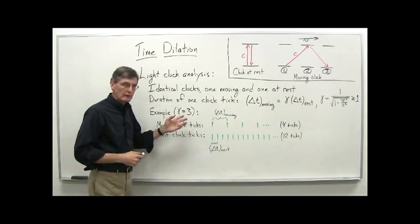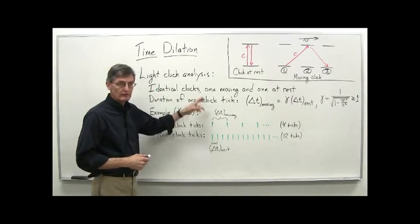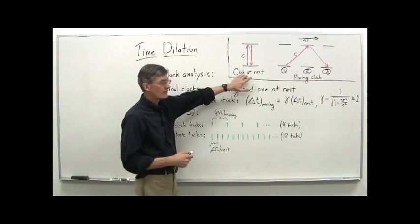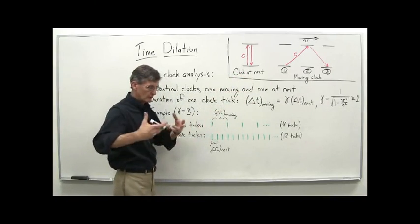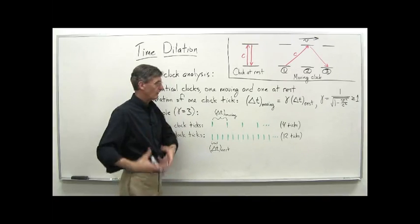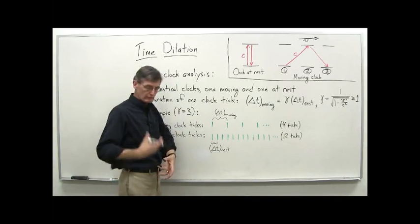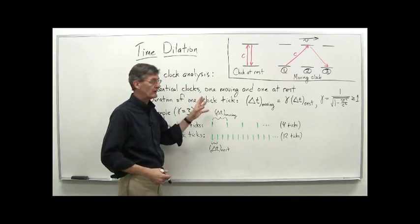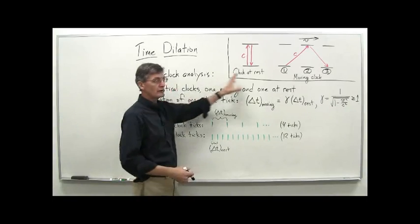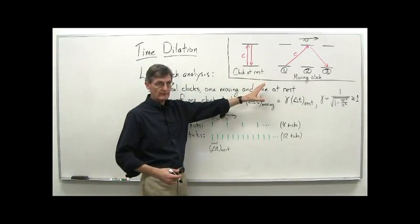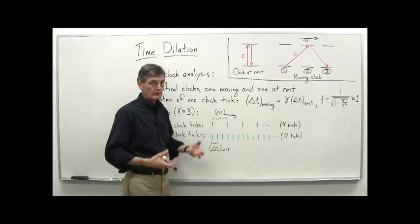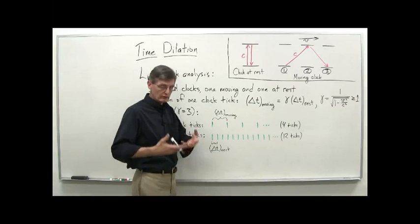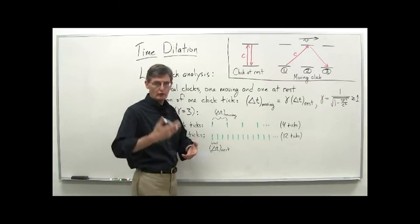Remember what we were doing here. We had identical clocks, one moving and one at rest. Here's the clock at rest — perhaps we're Bob, sitting here with our light clock ticking away with light beams going up and down. Then we have Alice with an identical clock who is moving with some velocity V with respect to us. Remember, to Alice, she's in her frame of reference, and so as far as she's concerned, her light clock is just bouncing up and down normally.